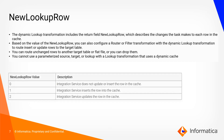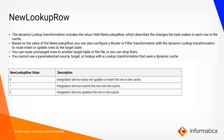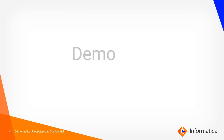The new lookup row port generates these values: 0 means the integration service does not update or insert the row in the cache; 1 means the integration service inserts the row into the cache; 2 means the integration service updates the row in the cache. Now let's go through the demo for SCD Type 2 implementation.